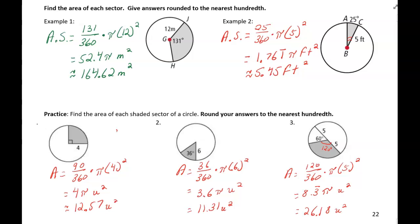Okay, so let's see how you did on the three practice problems. So for the problem on the left, you would say 90 divided by 360 times pi times 4 squared. Going through the math, you can see the answer is 4 pi units squared or 12.57 units squared if you multiply pi into the answer.